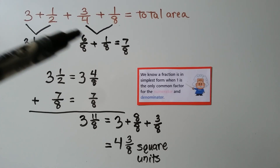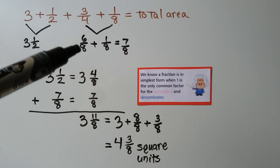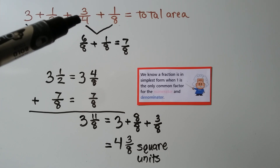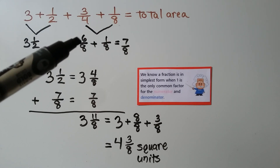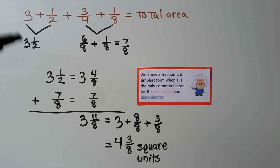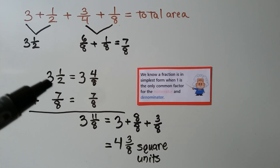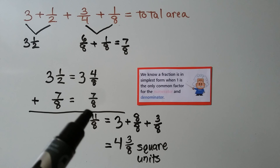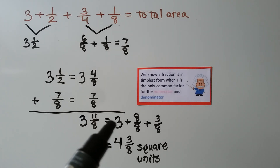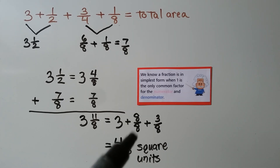We can add these using mental math. We have three plus a half — that's three and a half, which we set aside. Now we concentrate on three fourths plus one eighth. Three fourths as an equivalent fraction would be six eighths. We multiply the denominator four times two to get eight, so we multiply the numerator three times two to get six. Now we can add one eighth: six eighths plus one eighth is seven eighths. Now we add three and a half and seven eighths, needing a common denominator. One half equals four eighths, so three and four eighths plus seven eighths equals three and eleven eighths. That's equal to three plus eight eighths plus three eighths, so we pull out one whole and get four and three eighths square units.